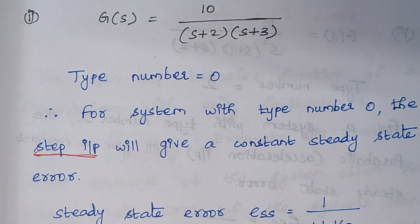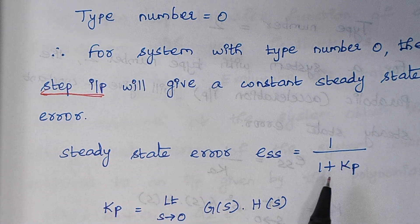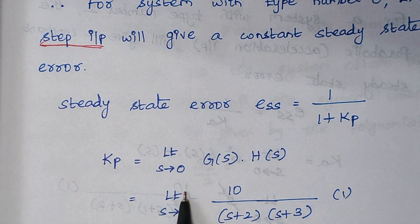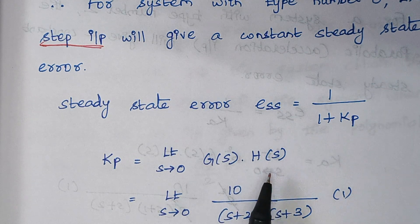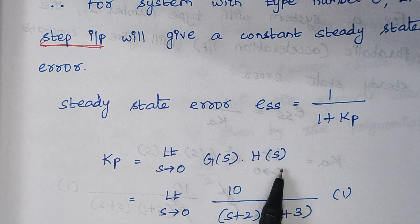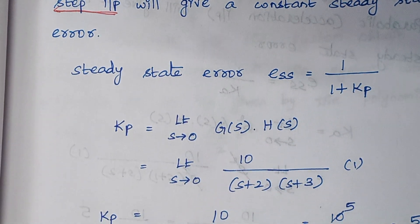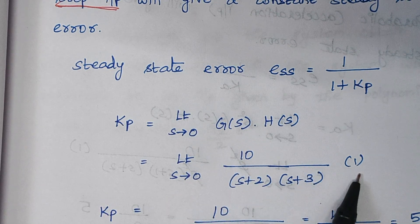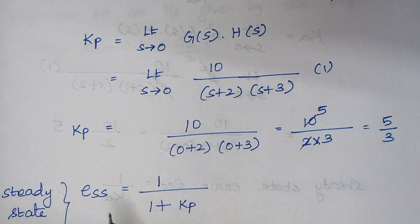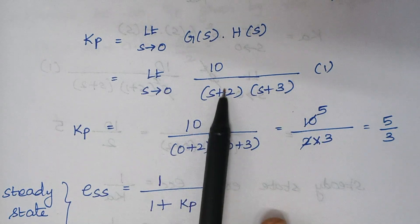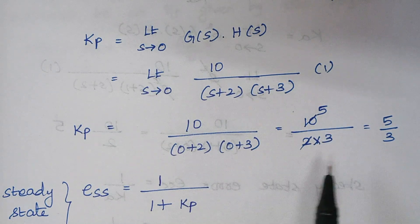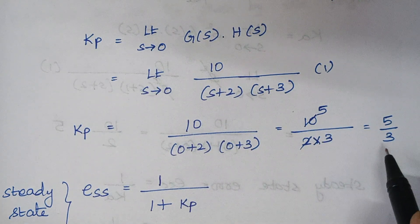The steady state error formula is ESS equals 1 divided by (1 + kp). The formula for kp is: limit as s tends to 0 of G(s)·H(s). Again the feedback is not mentioned, so we assume unity feedback. Substituting the values with s tending to 0 gives 10 divided by 2×3, which equals 10/6, so kp equals 5/3.